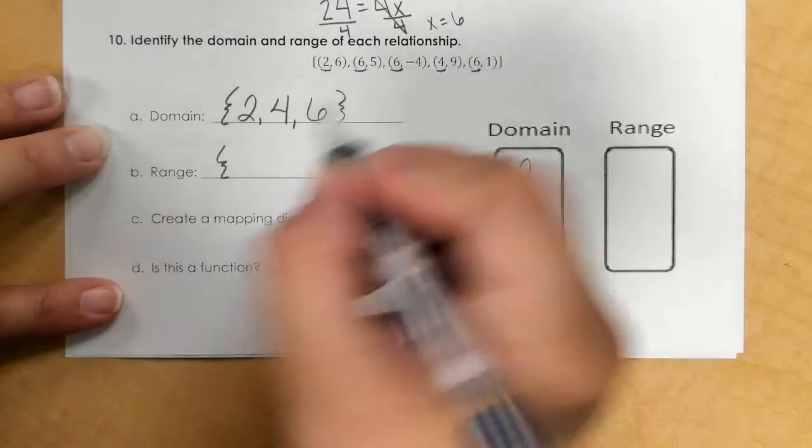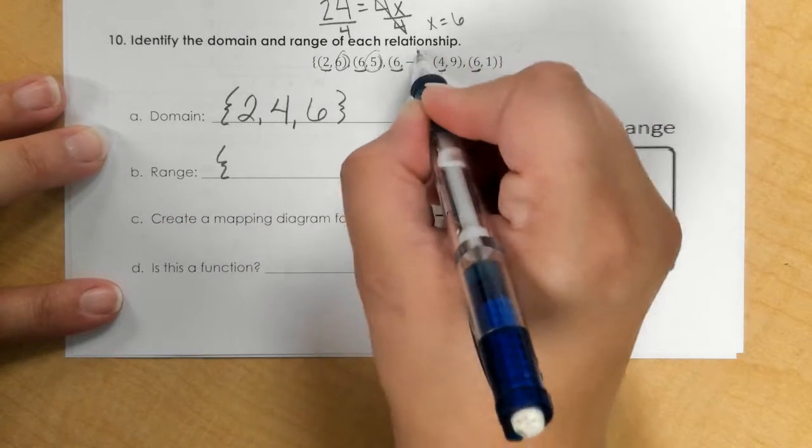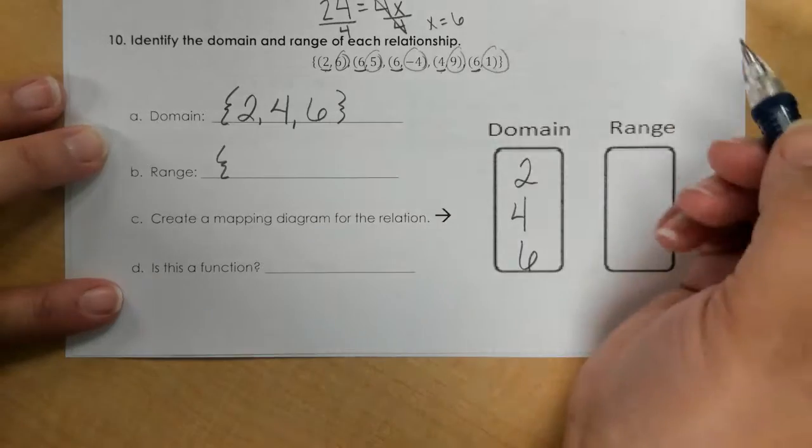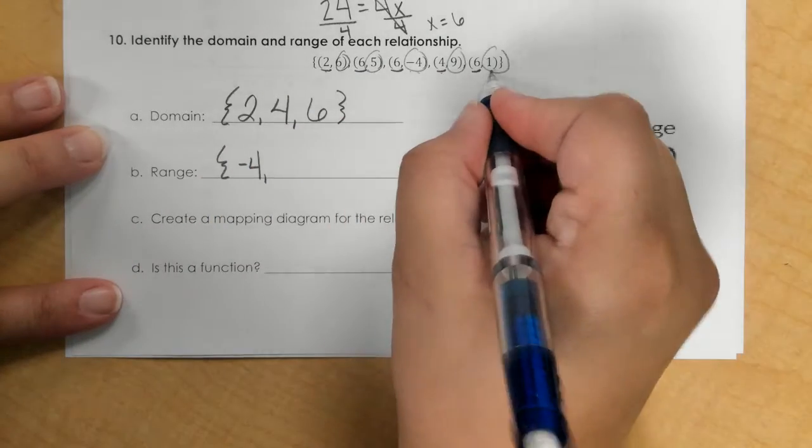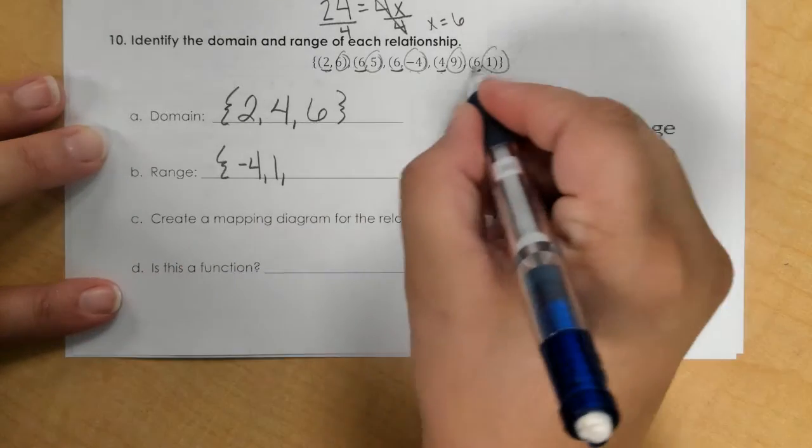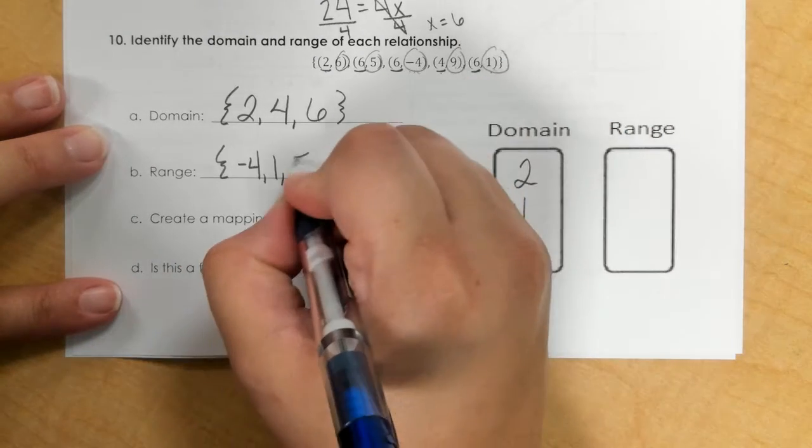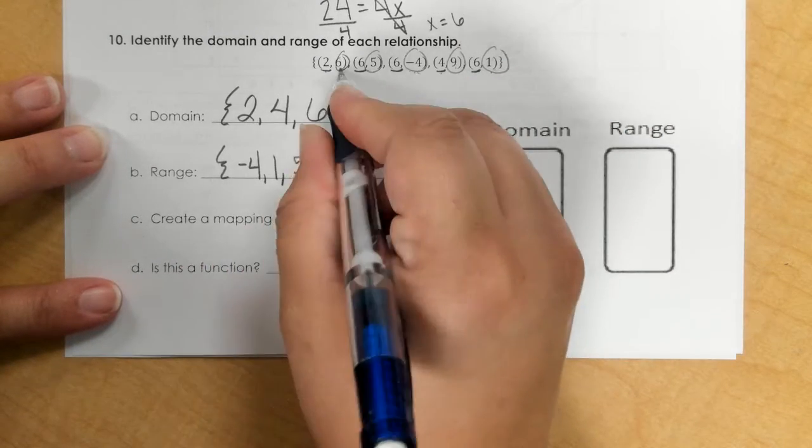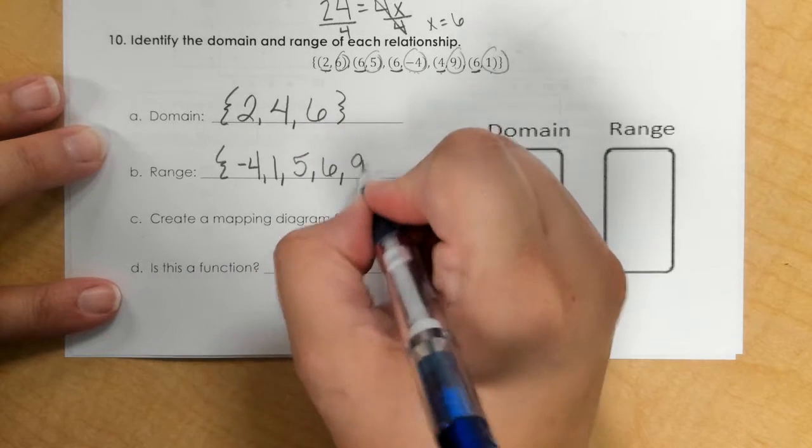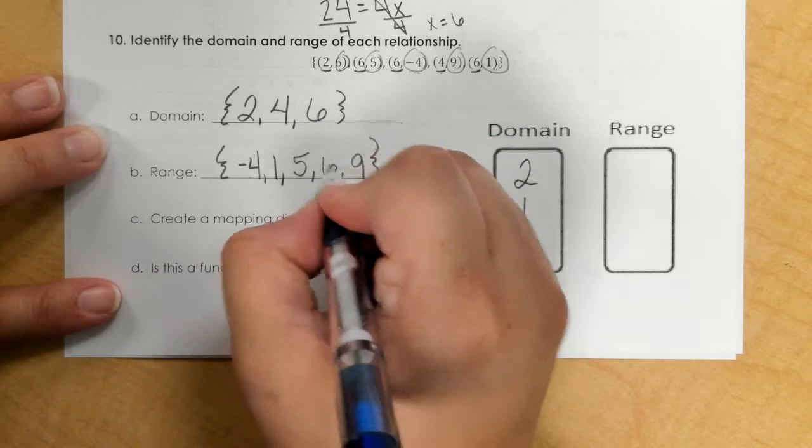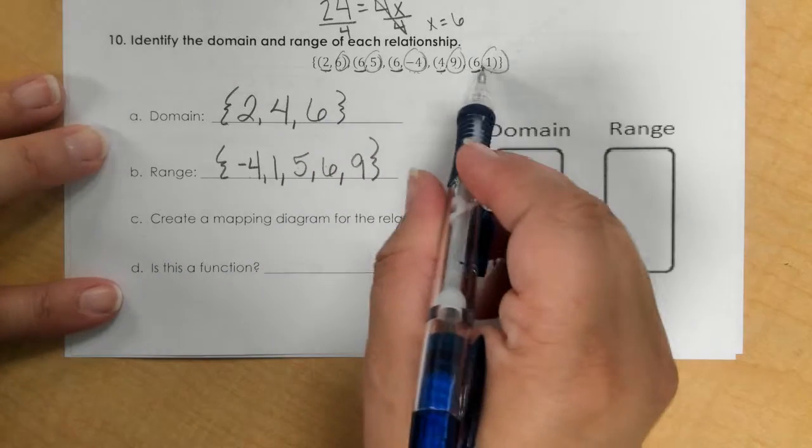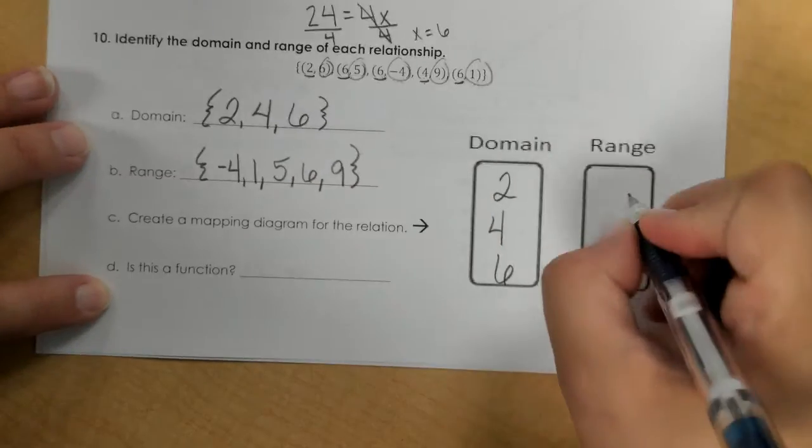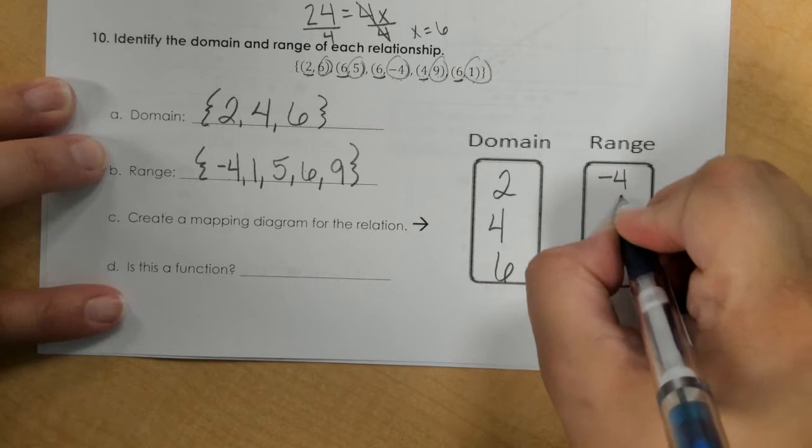For the range, I have 6, 5, negative 4, 9, and 1. So my least is negative 4, 1, 5, 6, and 9. I have 5 numbers here and they're all different for the y's, so I should have 5. I'm going to list those numbers in the range.